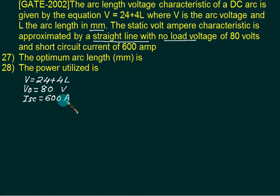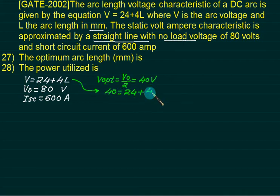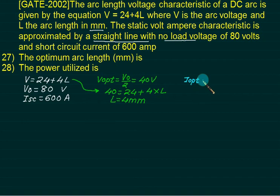What do you want? You want optimum arc length. Can we find out the optimum voltage? It is V0 divided by 2. So V optimum equals V0/2, which equals 40 volts. Using the arc voltage equation: 40 = 24 + 4 × L, which gives L optimum = 4 mm. V optimum is already known, and I optimum is Isc/2 = 300 amps. So power optimum is 40 × 300 = 12 kilowatts.